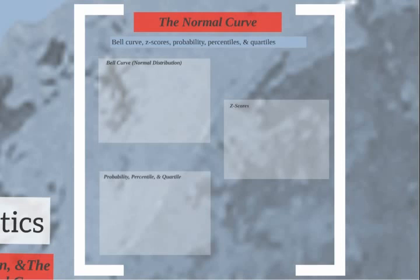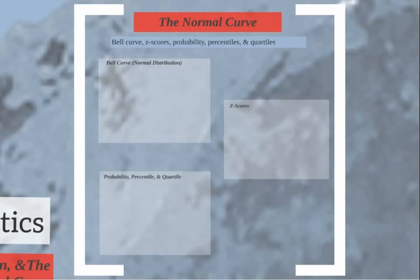This is the bell curve, normal distribution curve. If you're going to take anything from any of these lectures, this is the thing to really understand. If you're having a hard time with the normal distribution, I'd recommend reading more on it or watching additional videos on YouTube. Some students have a difficult time with this because it's kind of an ambiguous idea, so I'll try to put it in the best concrete form I can.